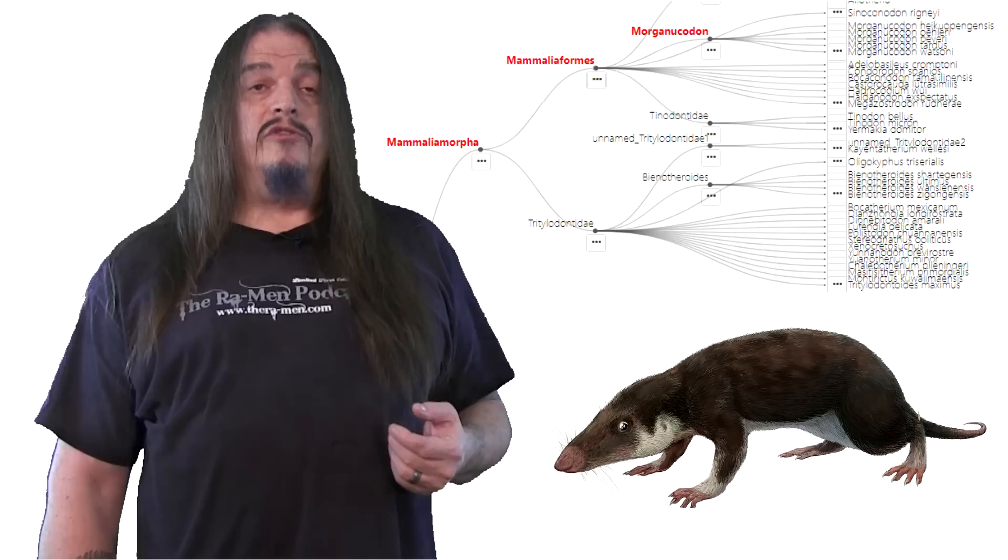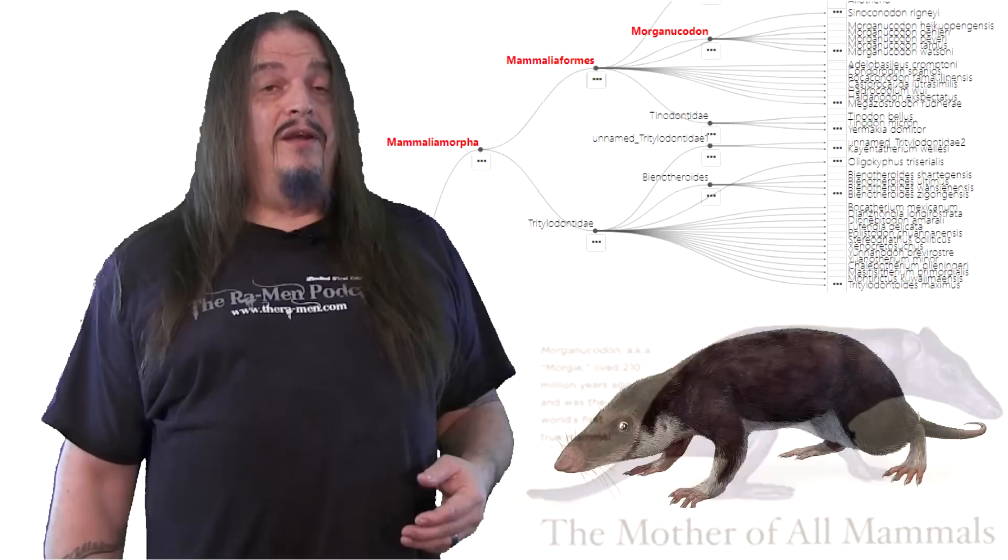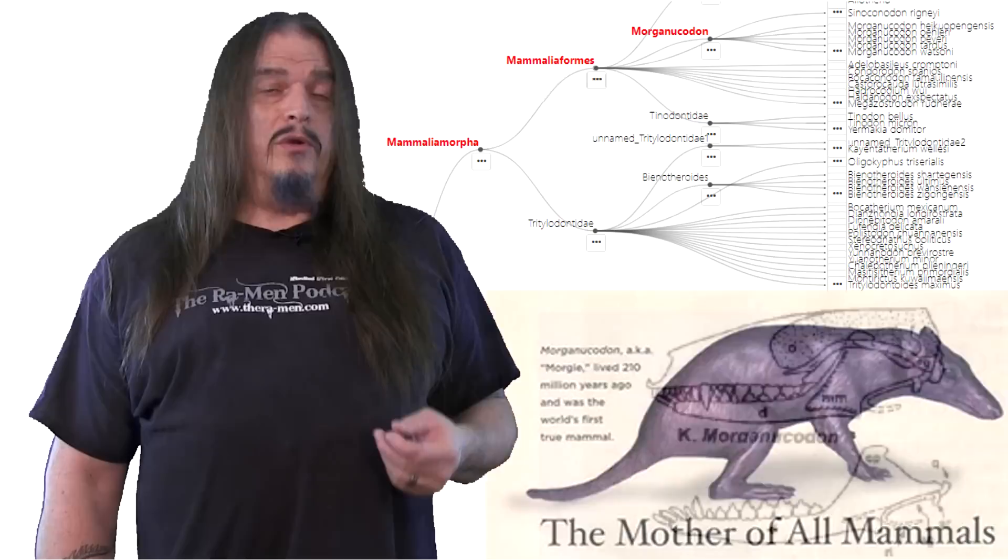And then we have Morganucodon, representing another important stage in the evolution of mammals. We have quite a few fossils of these from individuals of various ages, enough to know they were born toothless, implying that they were raised on mother's milk. And what's more mammalian than that? That's the most diagnostic of all mammalian traits.